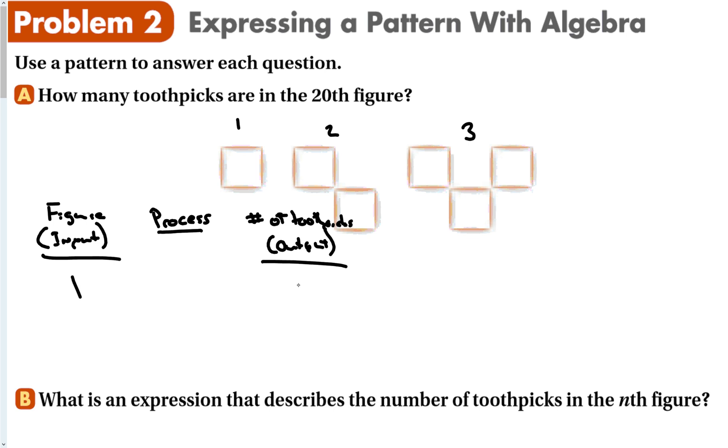So we can call it the figure, which is my input. Then I'm going to do something, right? It's going to be the process. And then the number of toothpicks. And that's the output for that particular part of the table. So in figure one, there's four toothpicks, right? One, two, three, four. In figure two, one, two, three, four, five, six, seven, eight. There's eight. In figure three, there is 12.